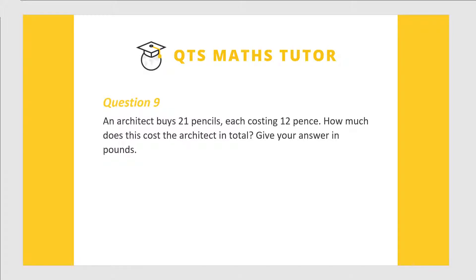An architect buys 21 pencils, each costing 12 pence. How much does it cost in total? Give your answer in pounds.